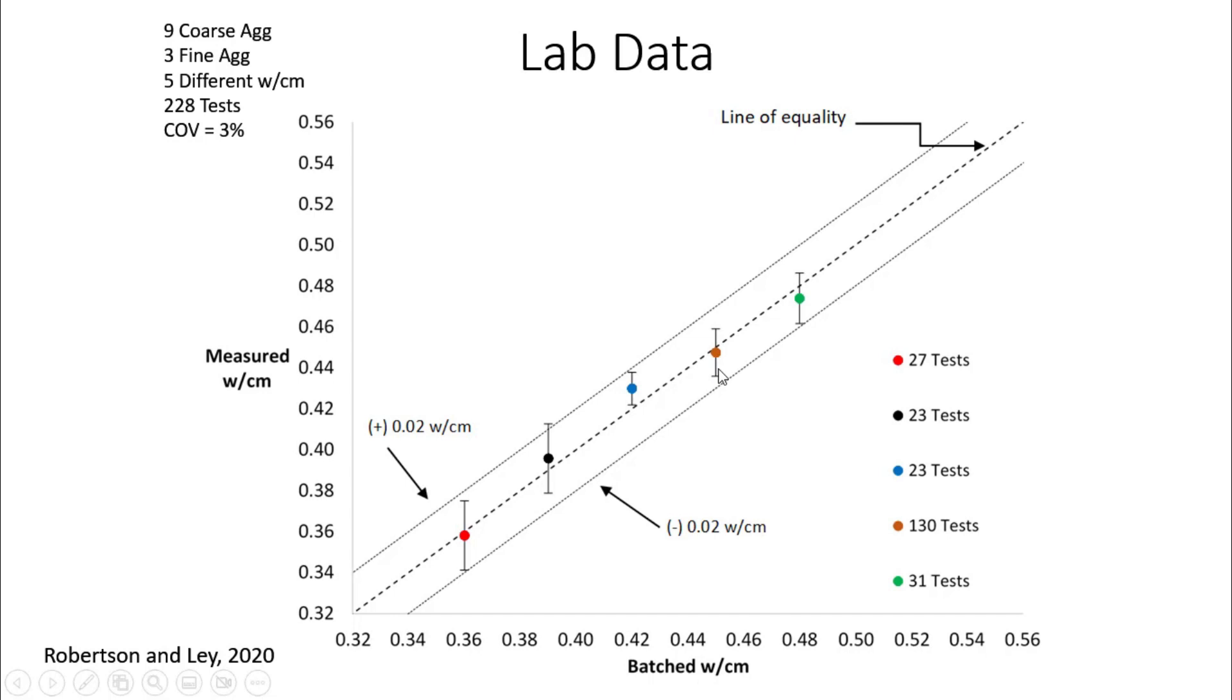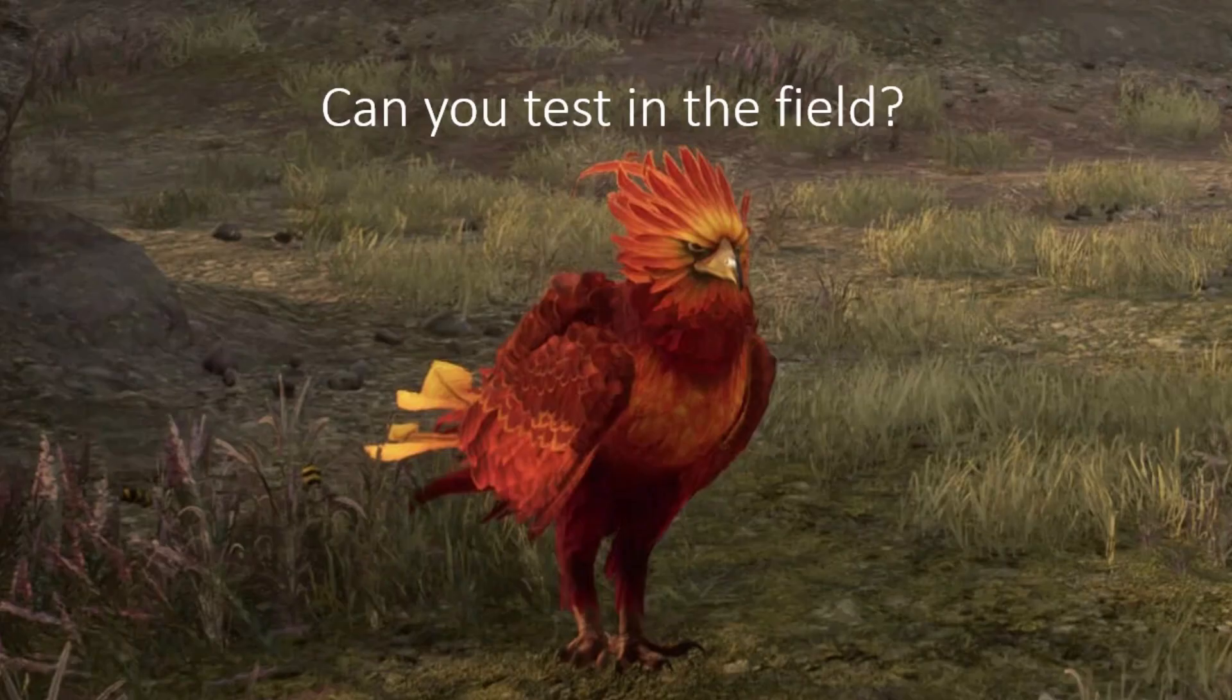And we show the average there and the standard deviation. This is more than 228 mixtures here. And one big thing that you want to see is how consistent the test is. Everything is pretty much within plus or minus 0.02 water-to-cement ratio. And look at this coefficient of variation, 3%. 3%. That's amazing. That's like, three times more accurate than a concrete cylinder test.